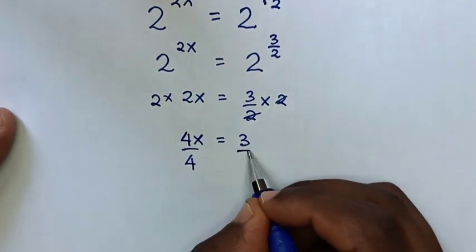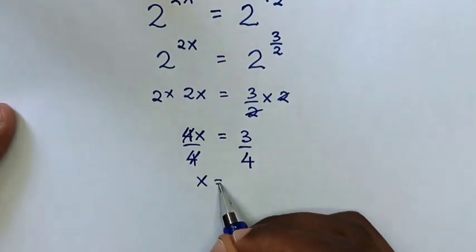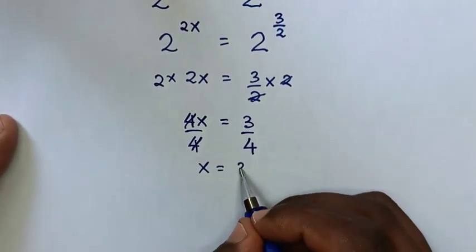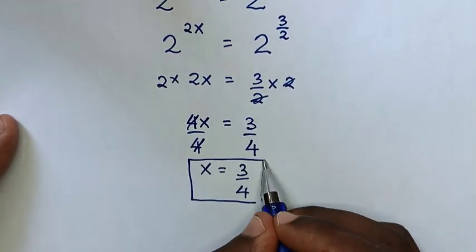Then in the next step, we'll divide by 4 on both sides, so this and this will cancel, so it will be x equals 3 over 4. So this is the final answer for the value of x.